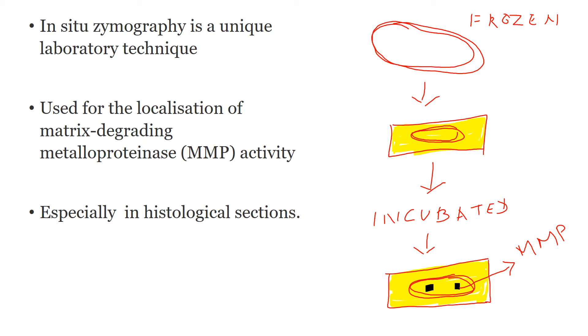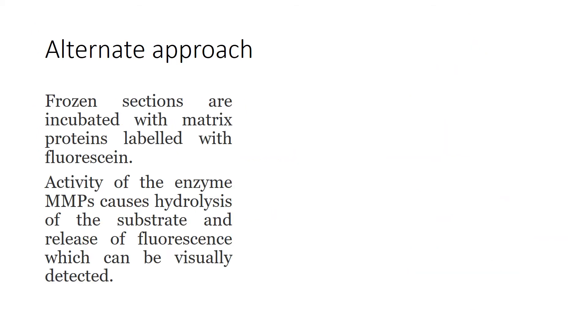Now let us understand the alternative approach. The alternative approach is instead of taking the frozen sample and placing it on a coated slide, the frozen sample is directly incubated inside a matrix protein plus fluorescein. The frozen sections are actually incubated with the substrate itself which is labeled or tagged with the fluorescein. This matrix protein which is tagged with fluorescein gives the tissue time during incubation so that the enzyme can show its activity upon the substrate.